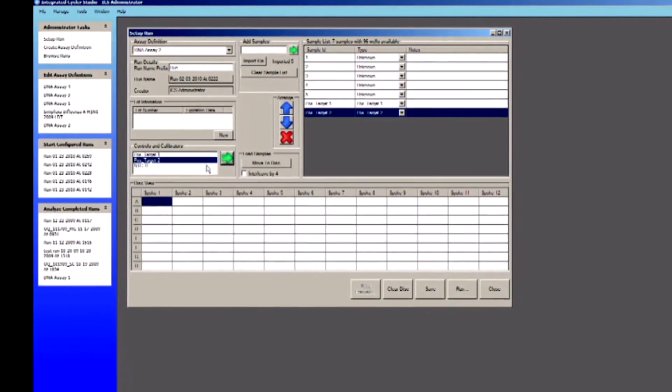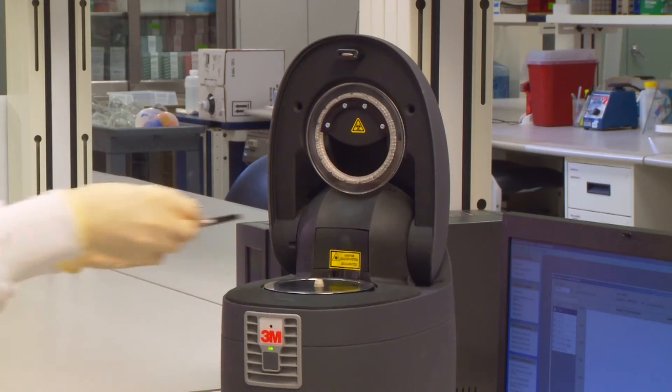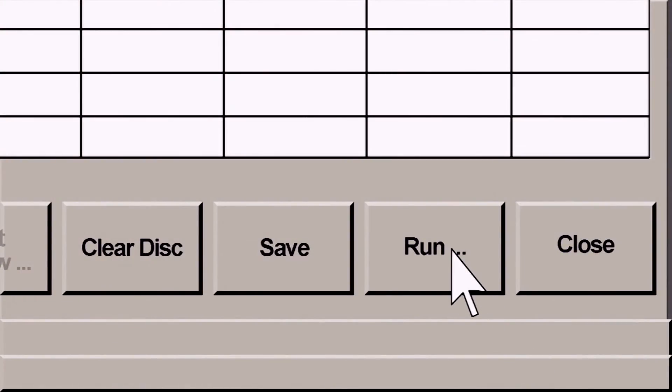Integrated Cycler Studio software notifies users to make certain that appropriate controls are added during a run setup. Place a disk on the platen, shut the lid and press run.